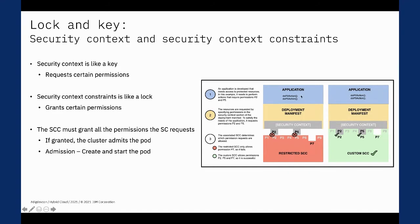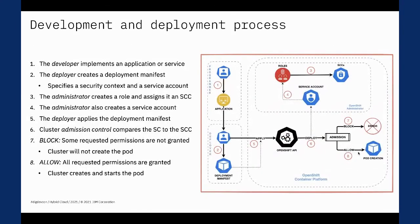Now here's the same application and pod again with the same security context, but now paired with the custom SCC which allows P2, P5, and P7. The security context needs P2 and P5, so that's satisfied. P7 is allowed but not required, which doesn't cause any problem. So this custom SCC will allow the pod to deploy because the pod requires P2 and P5 and the SCC allows them. It's the same pod in both cases — the first SCC blocks the pod, the second SCC allows the pod.